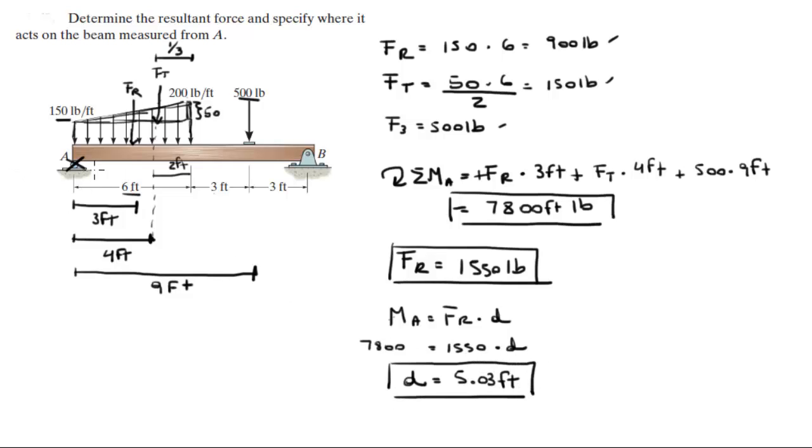Now, is it to the left or to the right of A? It's pretty obvious that it's to the right, there's nothing to the left. But it's to the right because the moment is clockwise, and to create a clockwise moment, the distance, the resultant force has to be to the right of A.